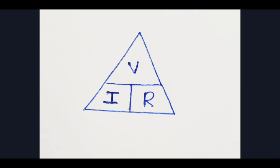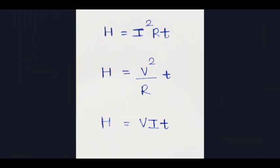In the question paper, you know V, I, and R. V is equal to I into R. You can see this equation. This is the current-carrying conductor. The current passes through the conductor. The current passing through the conductor turns into heat — that is the heat energy over time. That is H is equal to I squared R T.